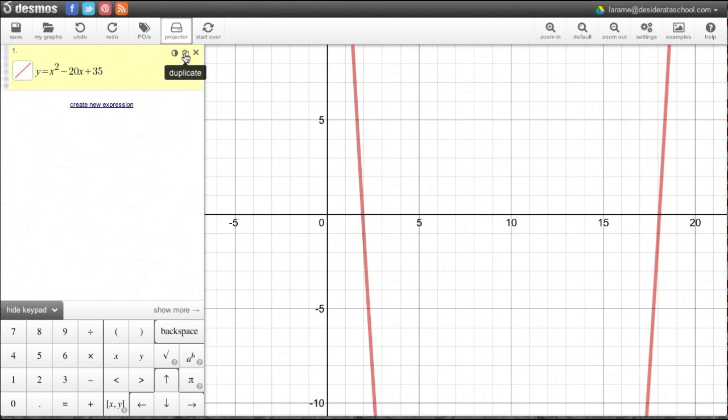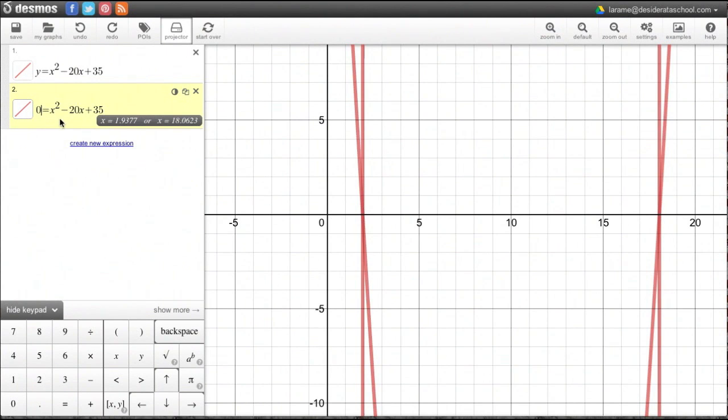We can do that by duplicating the function with this little duplicate button here, and then we'll just replace y with 0 right here. So we've solved this same function for 0 instead of for y, and you can see it tells us right here x equals 1.9377, so basically x equals 2, or x equals 18.06. So these two vertical lines here that you see, let me just flash them a little bit there for you, those two vertical lines represent those two values. So our two x-intercepts are approximately 2 and 18.